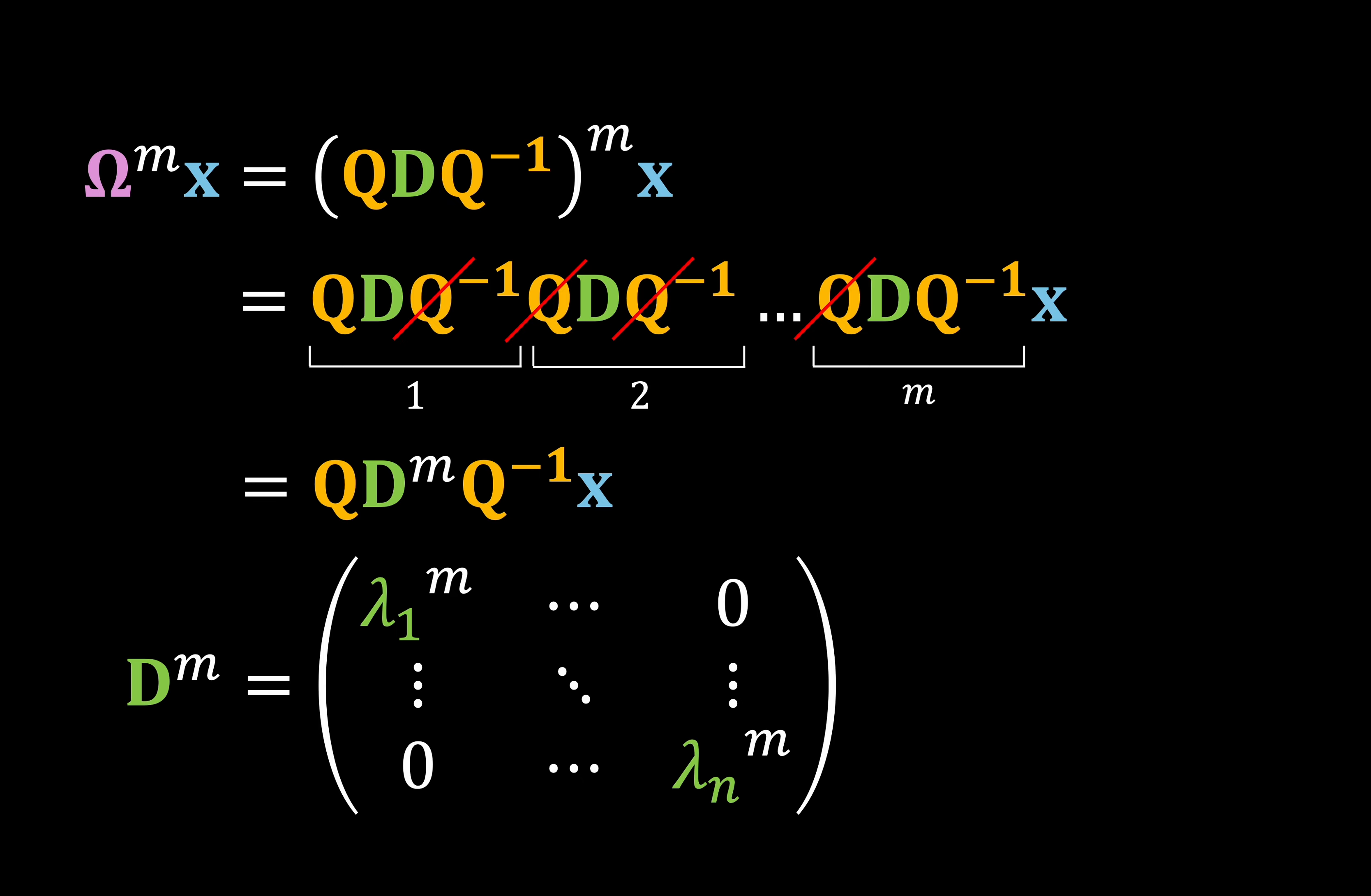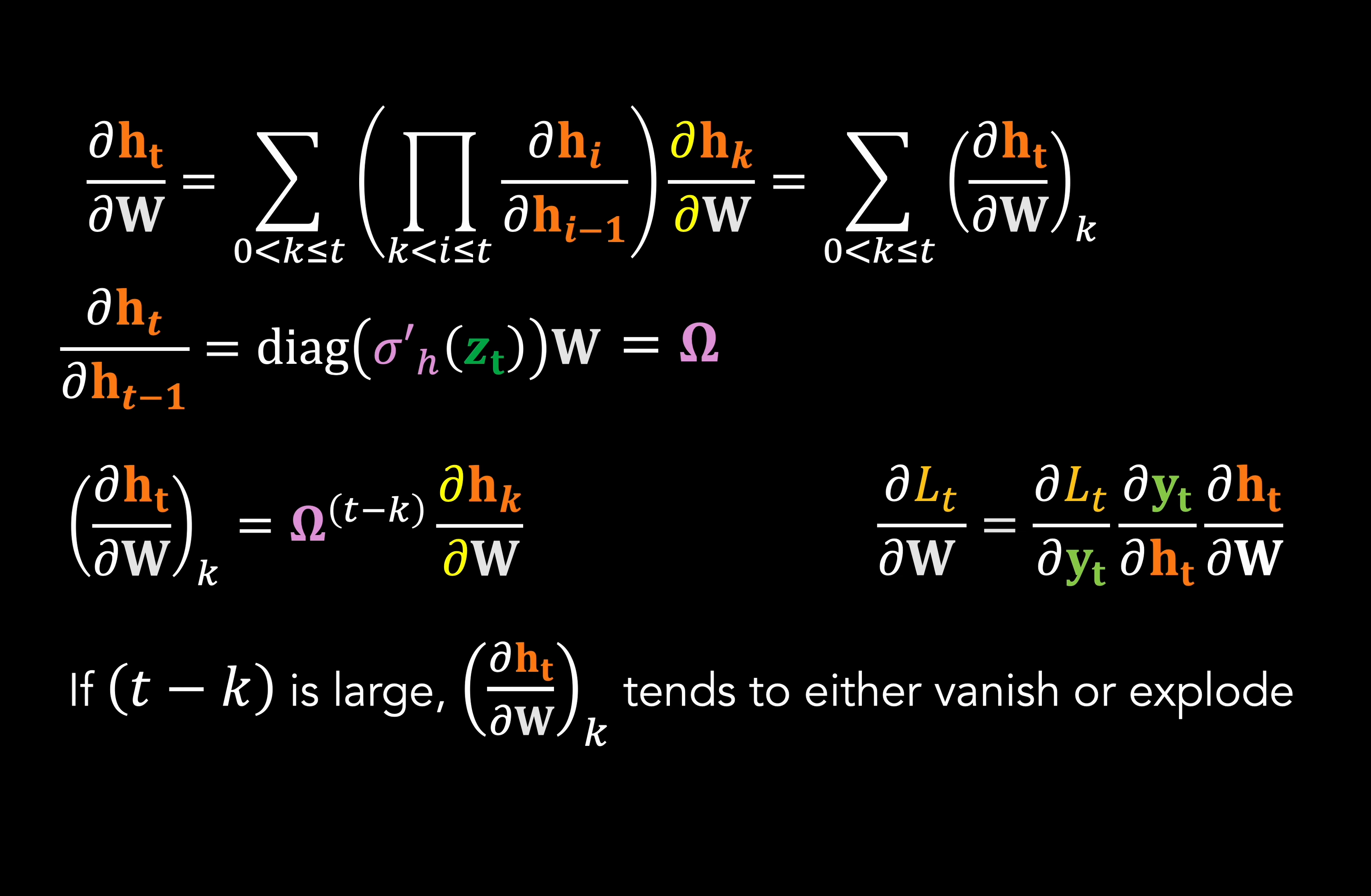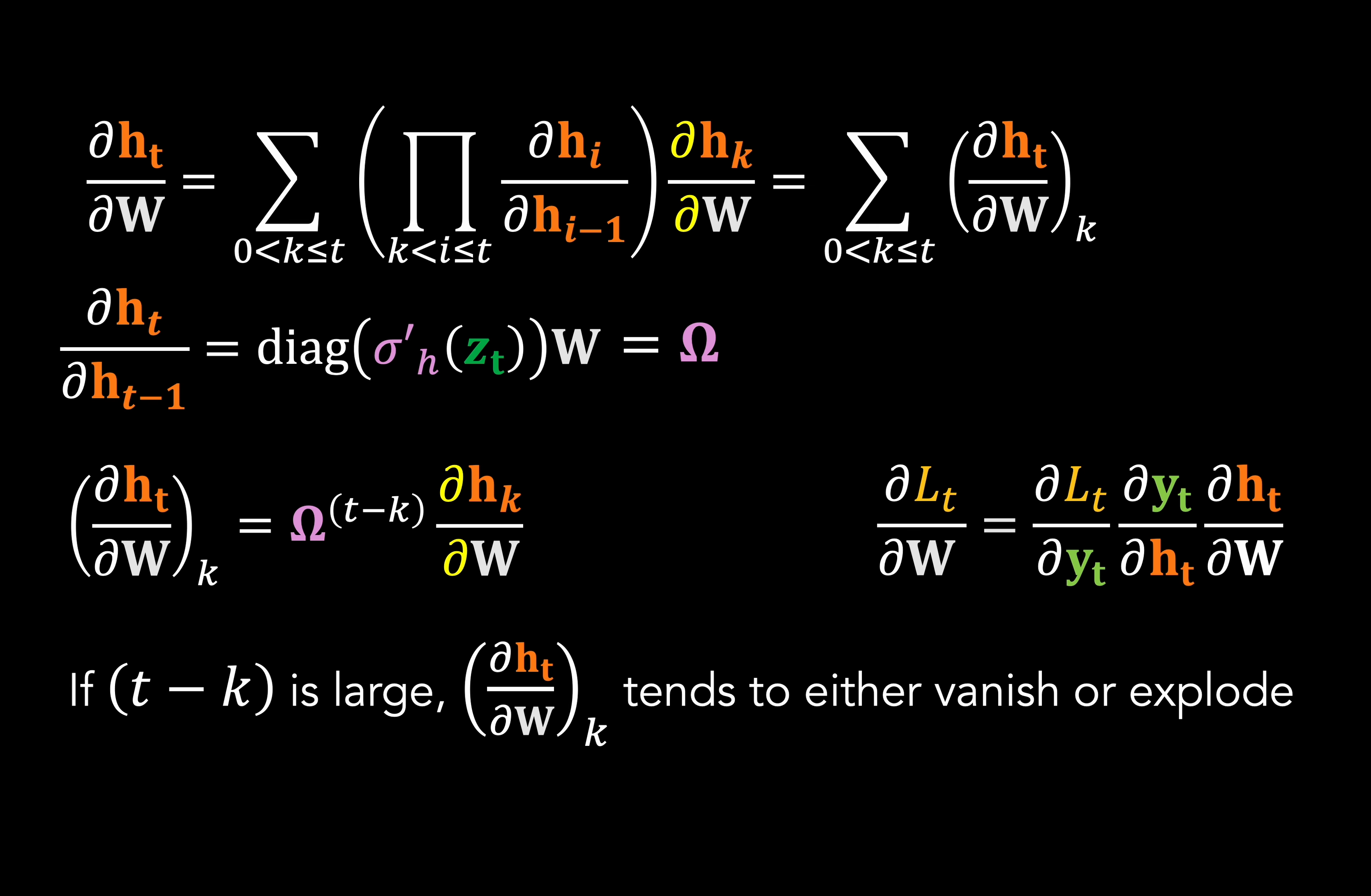Now if our m is equal to t minus k, then it's easy to see how we can end up in a situation of either vanishing or exploding gradients. So now we can actually rephrase our conditions for these problems in terms of the spectral radius of omega. And from here, it's just a short step to framing these rules in terms of our weight matrix W, which is our eventual goal.